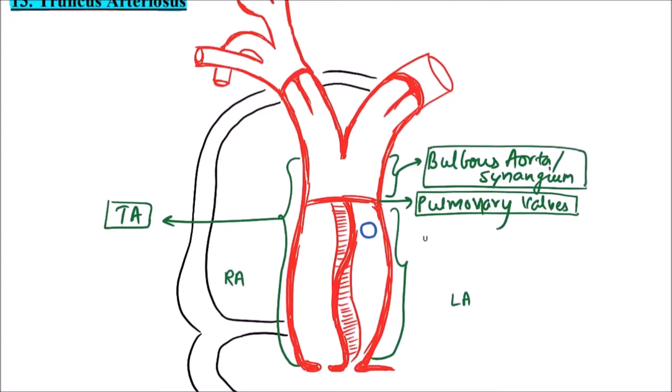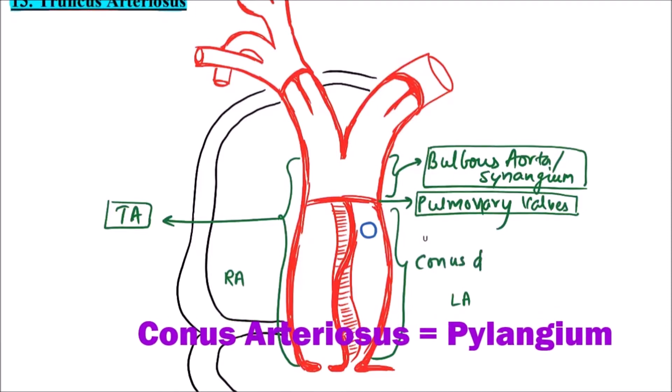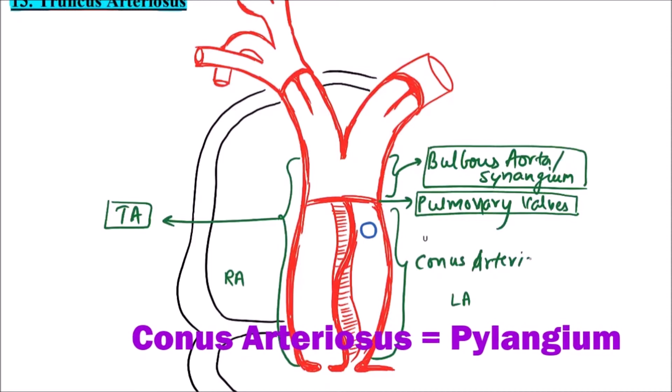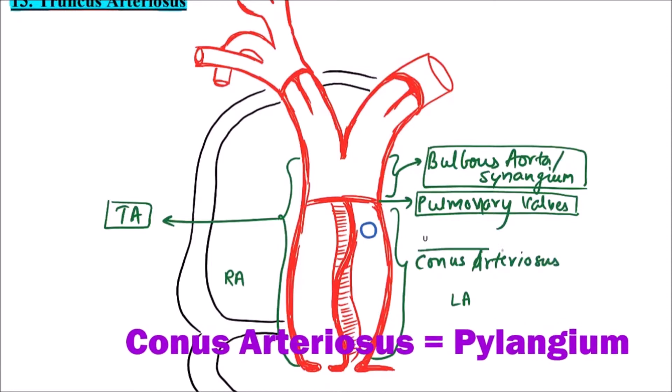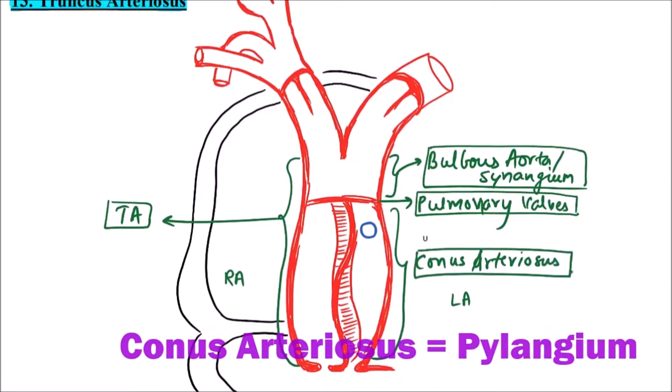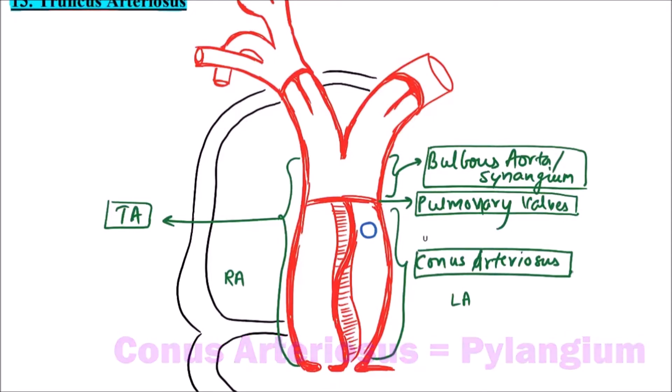While the second chamber is conus arteriosus. This conus arteriosus is long, basal, and thick-walled. Then in the truncus arteriosus we can observe another structure in the conus arteriosus chamber.